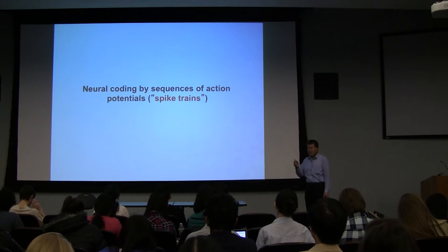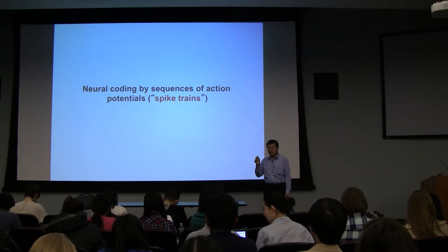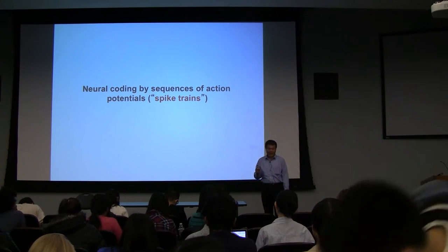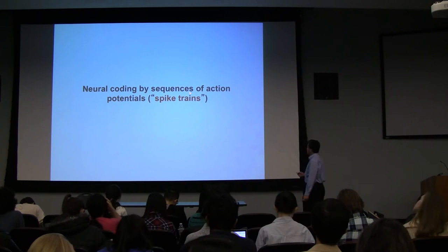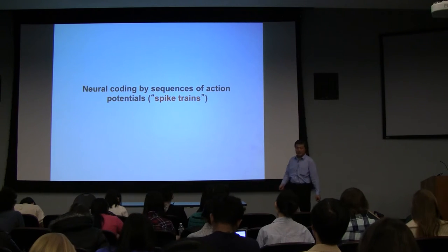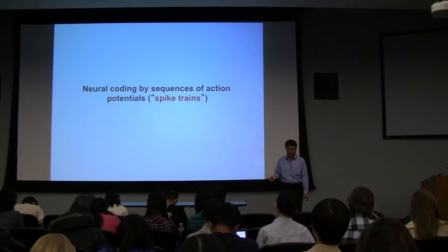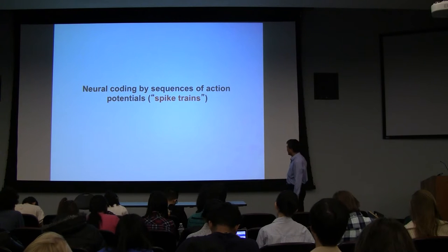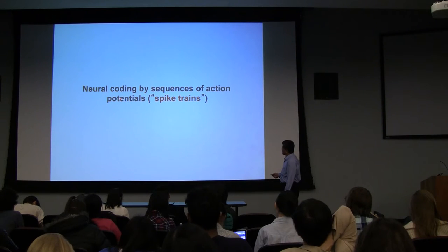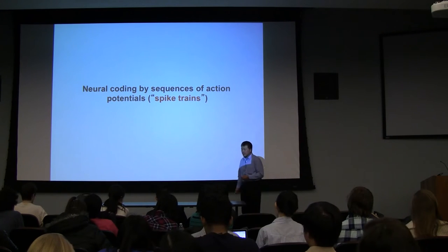The neuron in the brain, as we talked about in other instances in this class, transmits information from one neuron to another by means of action potentials. We also call them spikes. Because we often have a sequence of them, we call it a spike train. Spike, action potential, discharge — all the same thing. Today we're going to talk about the means by which the nervous system encodes information by sequences of action potentials or spike trains.